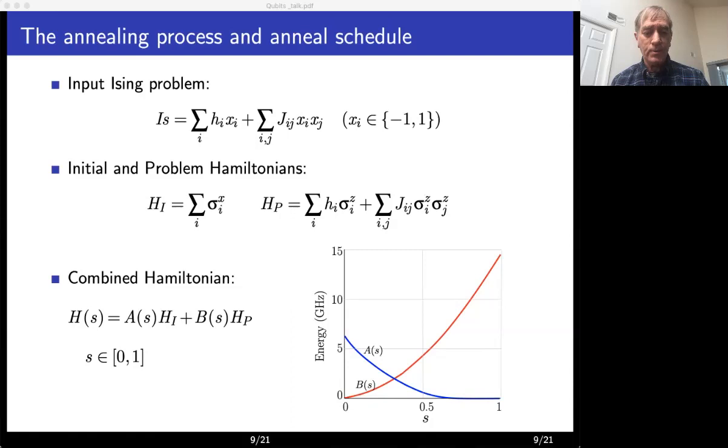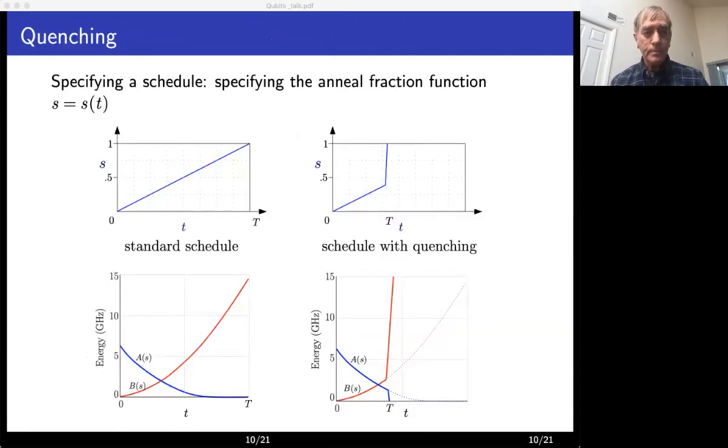So to define the schedule, we have to specify s as a function of the time t. So here are examples of two schedules. In the standard one, s grows linearly with t and hence A and B as functions of t on the bottom left have the same shape as in the previous slide. In quenching on the right, s increases linearly until some point of time, the top right figure, after which it abruptly goes up to one. On the bottom right, you can see the corresponding functions A and B for quenching.